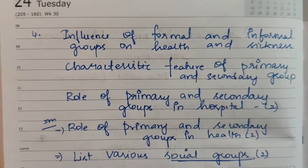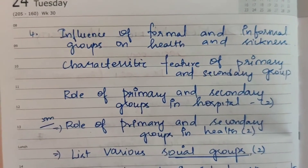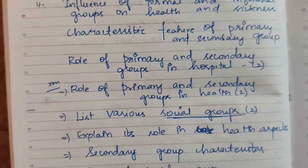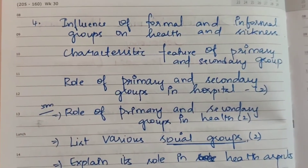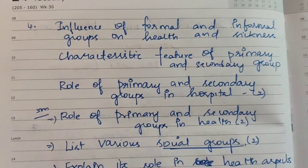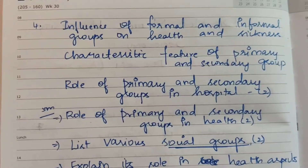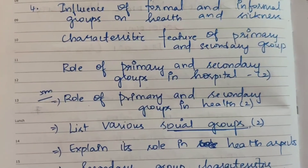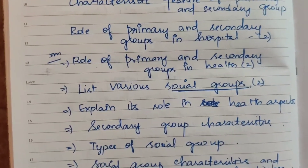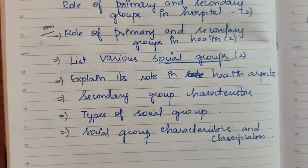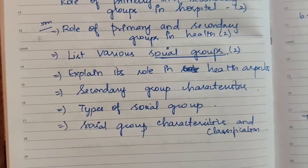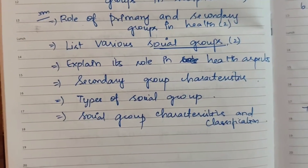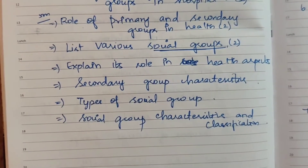Fourth question: Influence of formal and informal groups on health and sickness — one time for 15 marks. Social group is a key topic here. Characteristic features of primary and secondary groups, and role of primary and secondary groups in hospital — asked two times. List various social groups and explain their role in health aspects — also asked.